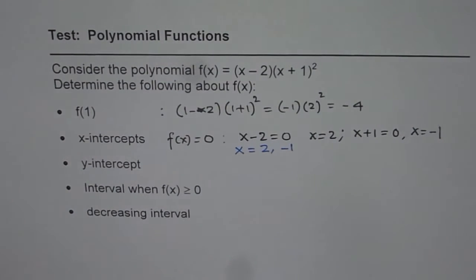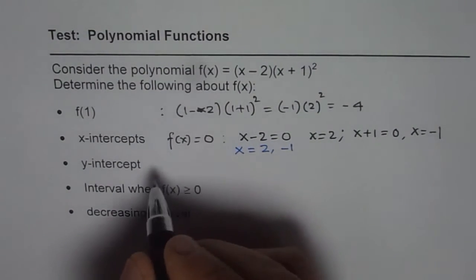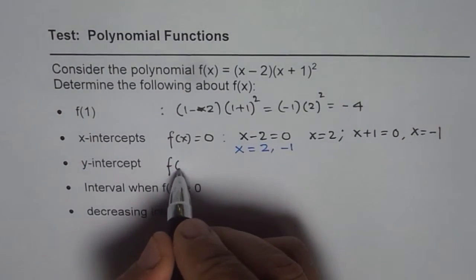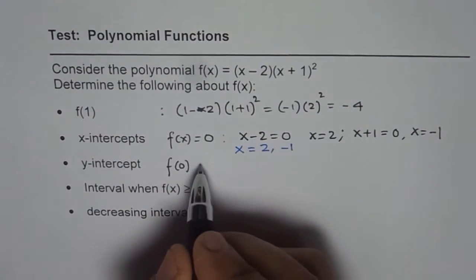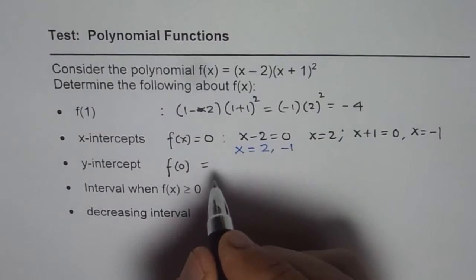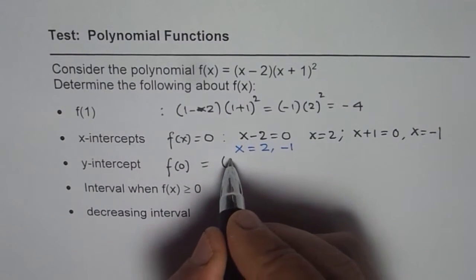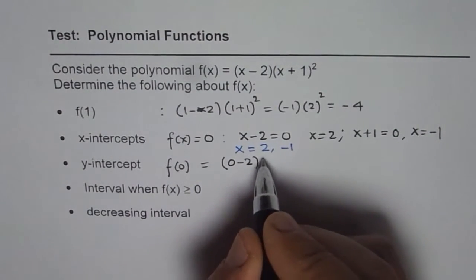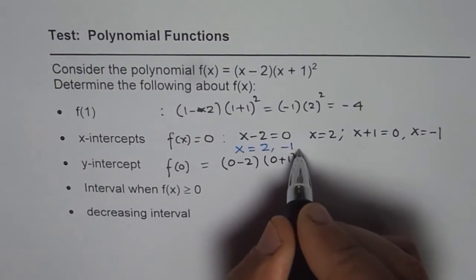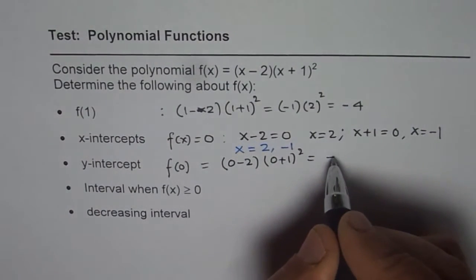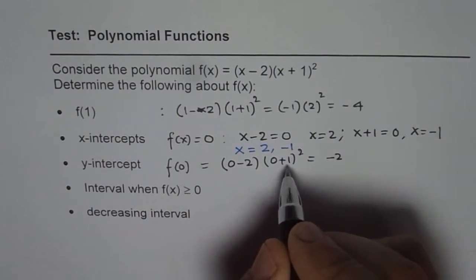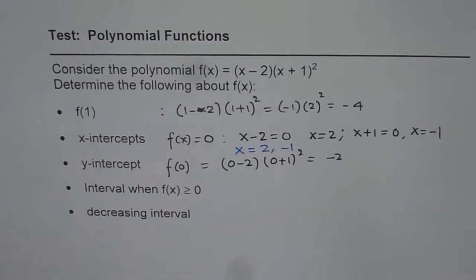Now let's look into y-intercept. Y-intercept is the value of function when x is 0. So basically we have to replace x with 0 and find the value of y-intercept. So we get (0 - 2)(0 + 1)² that gives us -2 as our answer. 1 squared is 1.